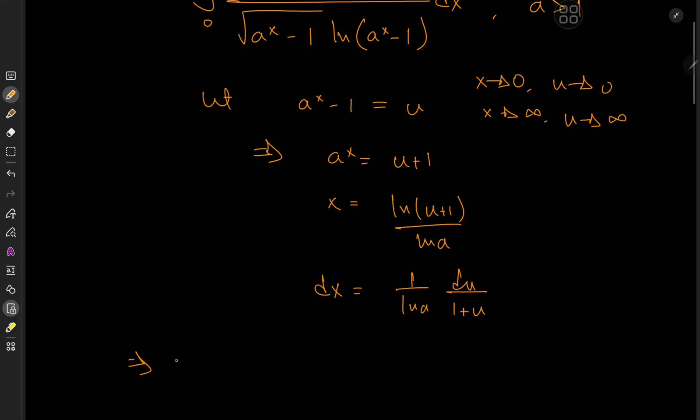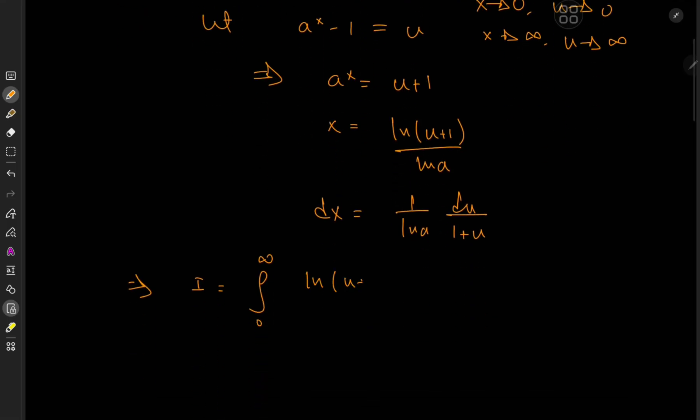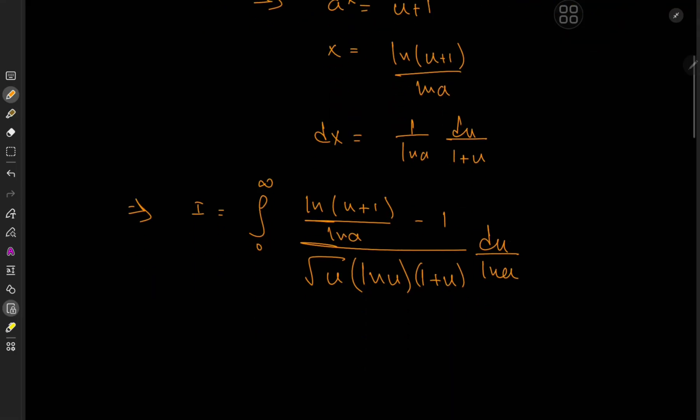Okay cool, so this implies that the target integral I is now the integral still from 0 to infinity of, let's see, x - 1 up top, so x was log(u + 1) over log(a) minus 1 over root u times log(u). And we also have this (1 + u) term because of the differential element, and we will have a 1 over log(a) term outside, for which I will need more space, so I'm just going to write it over here for the time being.